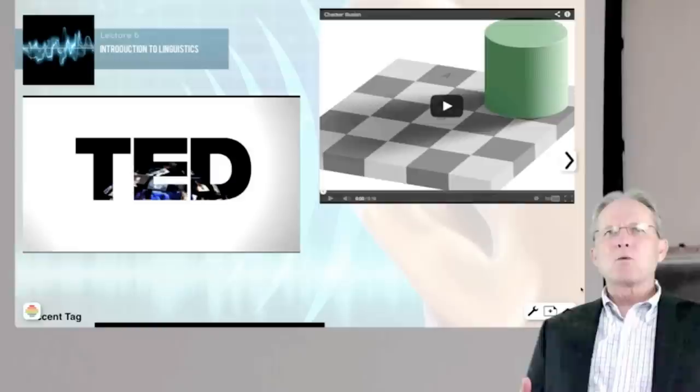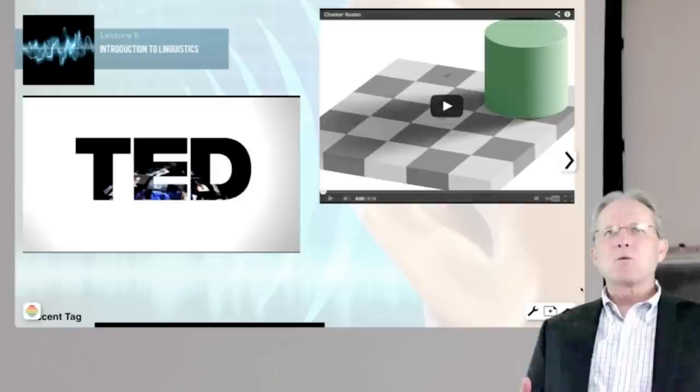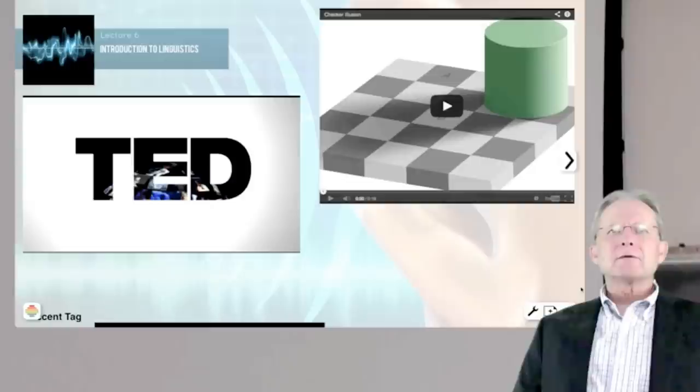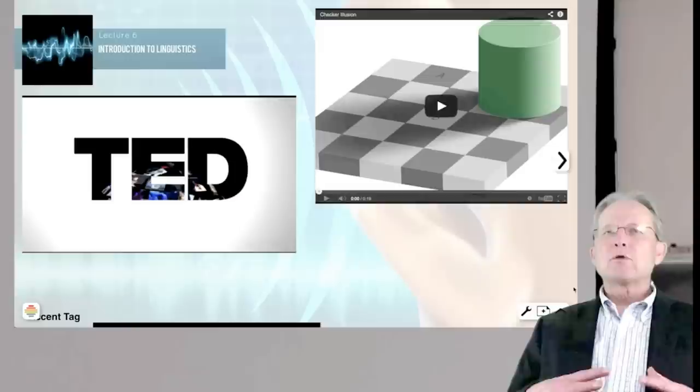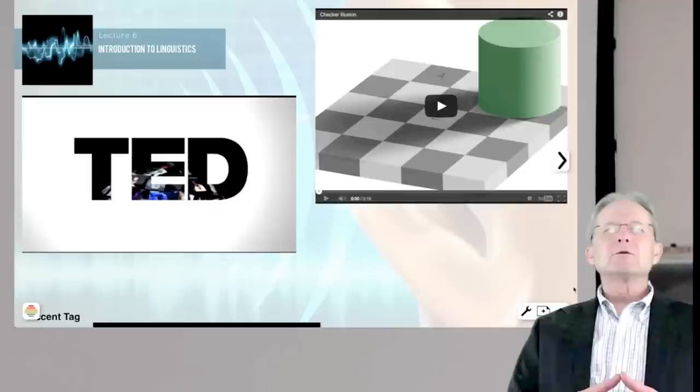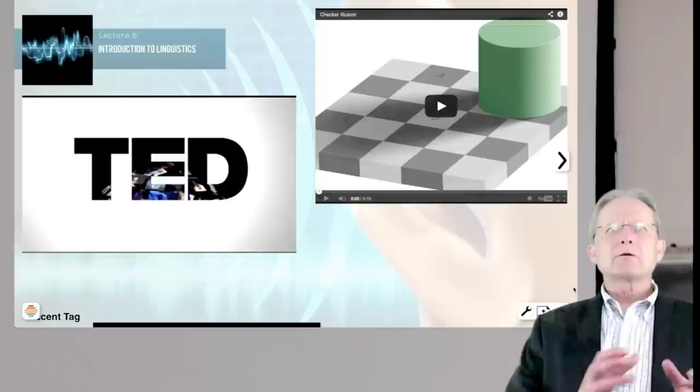Given that the speech stream includes an infinite variety of different exact sounds with the parameters constantly varying, and yet we're able to, from that speech stream, pick out parts of it that we count as segments, and those segments are the building blocks for words. So how is it that we do that?